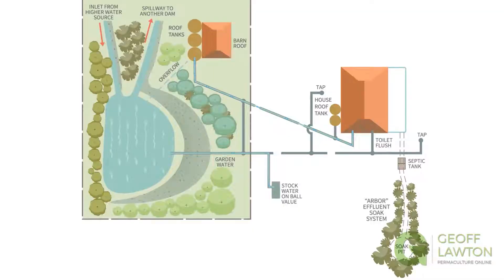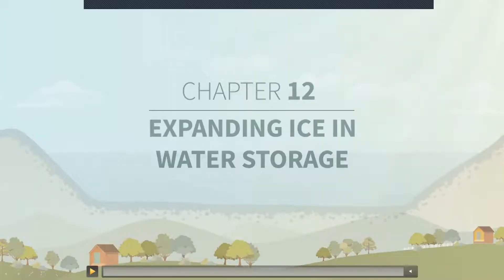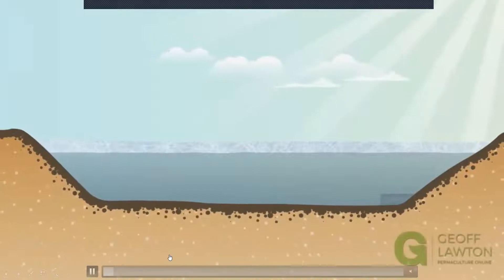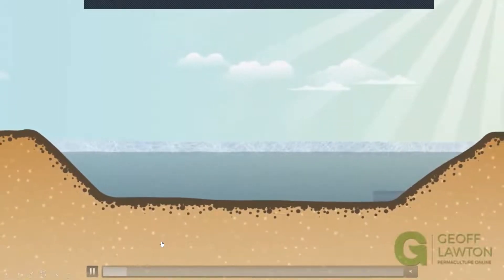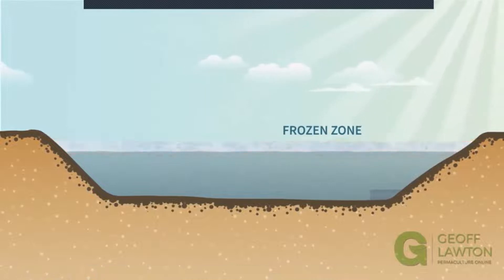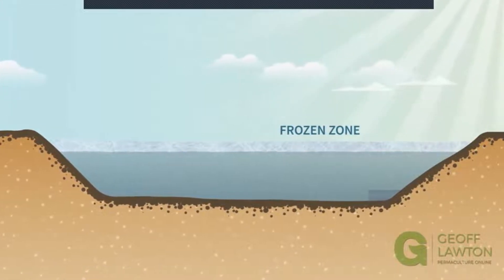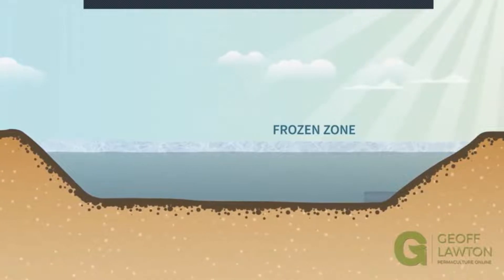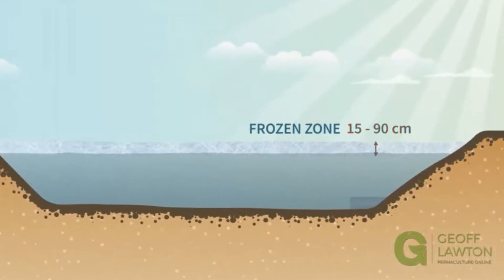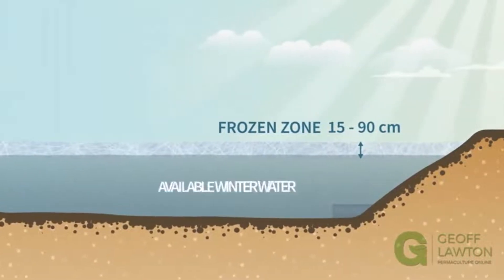You can also have dams in cold climates, but forethought must be given to the shape of the catchment so that you make room for the expansion of ice on the upper portion. Otherwise it could easily break your dam — all that water has a lot of pressure, and when it expands it's a serious force.